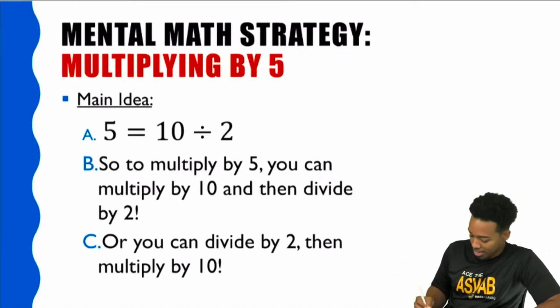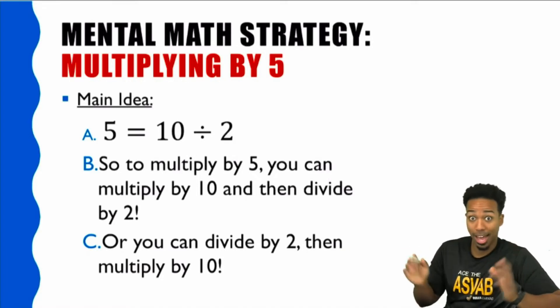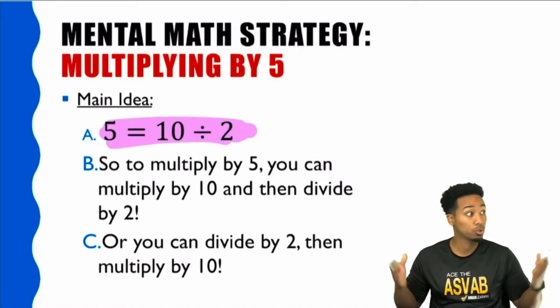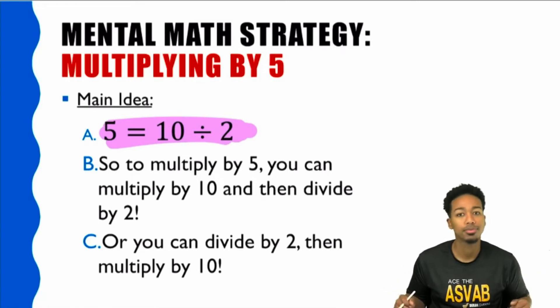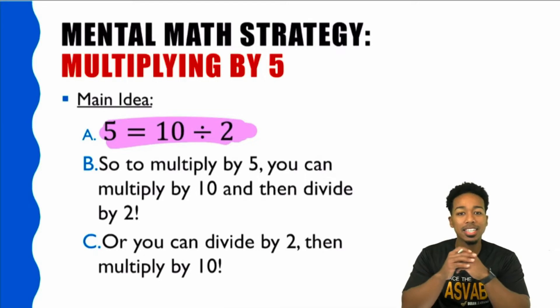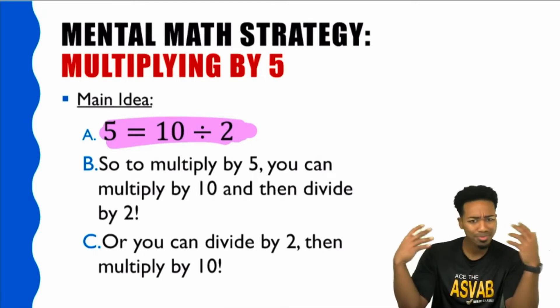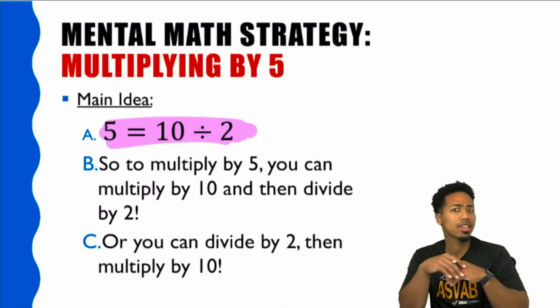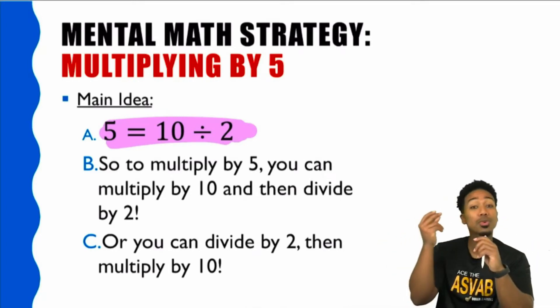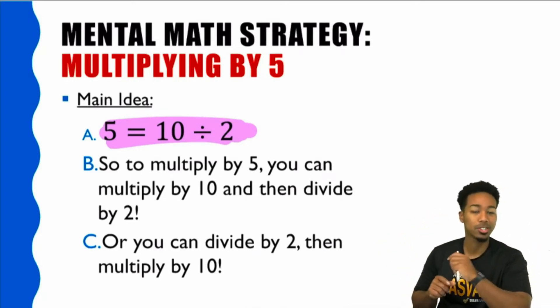Here's the main idea right here. Is this a fact or not? Five is the same thing as 10 divided by two. True or false? True. Five literally is 10 divided by two. So what does that mean? So instead of looking at a problem like, oh man, 84 times five, I don't know if I can do that in my head. You can. You can do that before you even pick up your pencil to try to do it.